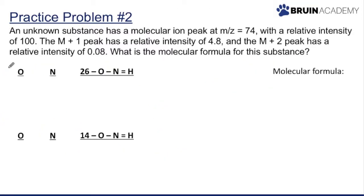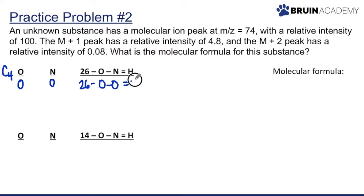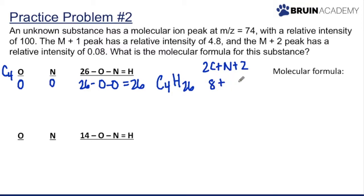For C4: 74 minus (4 × 12) = 26 AMU remaining for oxygen, nitrogen, and hydrogen. Testing zero oxygens and zero nitrogens: 26 AMU left gives C4H26, but the H rule (2C + N + 2) gives a maximum of 2×4 + 0 + 2 = 10 hydrogens. 26 exceeds 10, so this doesn't work.